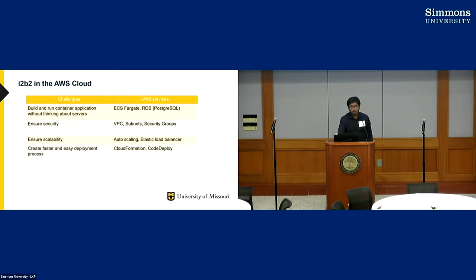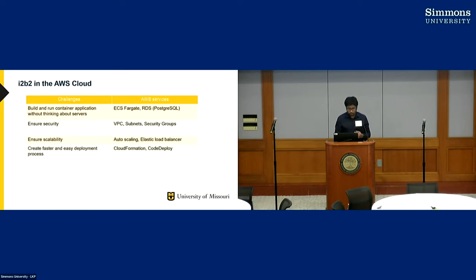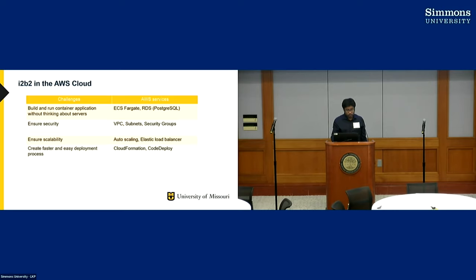Accessing I2B2 over the internet brings some challenges, such as ensuring it is highly secured, scalable, and available to end users. We have tried to solve those challenges using the following AWS cloud services. We used AWS Elastic Container Services and Relational Database Service to build and run I2B2 without managing servers. We created VPC subnets and security groups to ensure security, used auto-scaling Elastic Load Balancer for scalability, and used CloudFormation and CodeDeploy for faster and easier deployment.